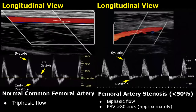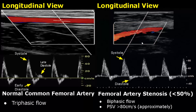Femoral artery stenosis is the abnormal narrowing of the artery. Its main cause is atherosclerosis. There are various degrees of stenosis. In this case, there is less than 50 percent stenosis of the artery. You can see some narrowing of the artery, and the spectral Doppler waveform looks almost normal, but it is a biphasic flow instead of triphasic.